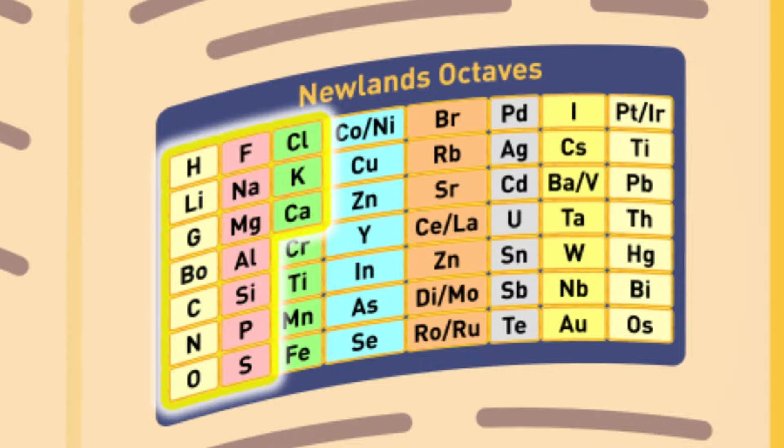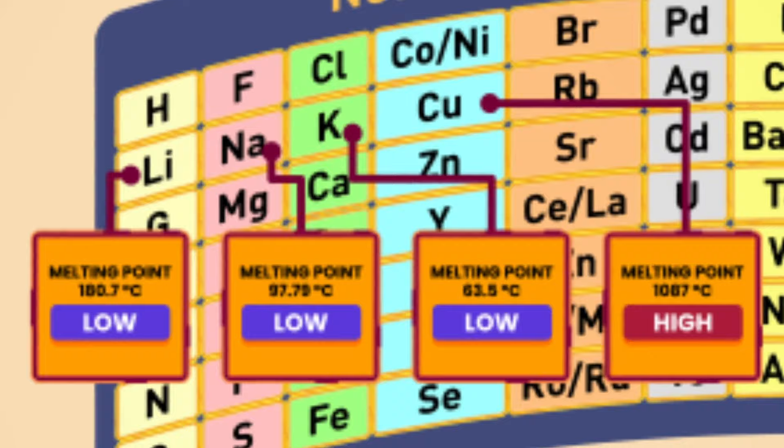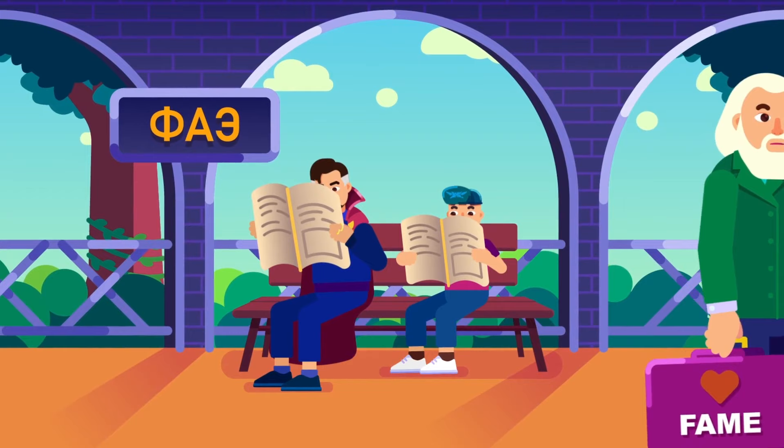The problem was that although the pattern did exist at first — until calcium — it eventually broke down, making some elements grouped together despite not having similar properties.